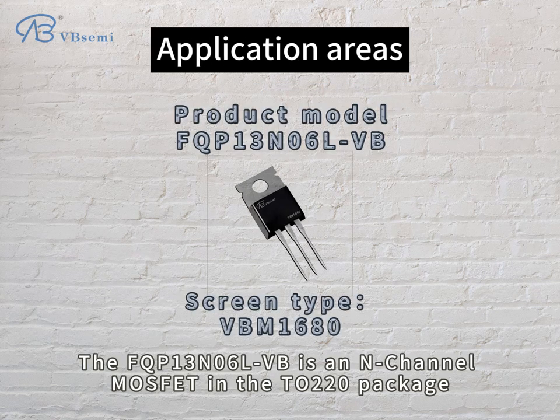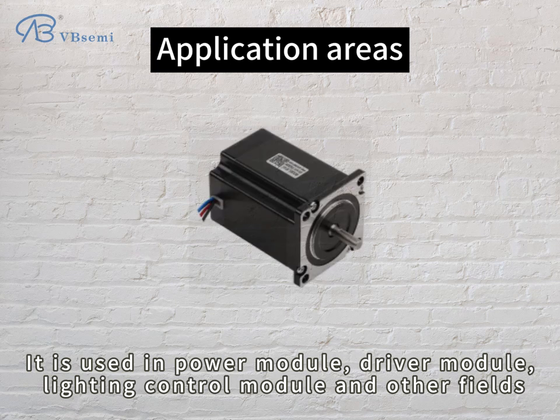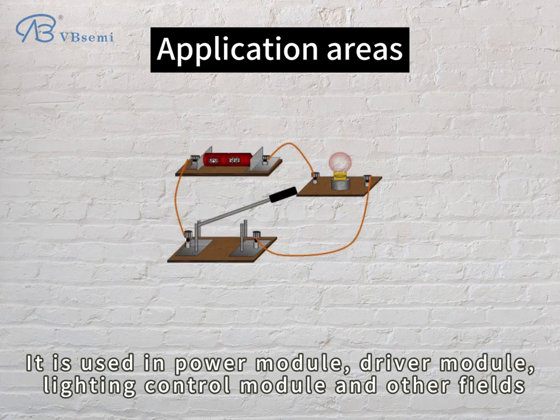The FQP13N06 LVB is an N-channel MOSFET in the TO-220 package. It is used in Power Modules, Driver Modules, Lighting Control Modules, and other fields.